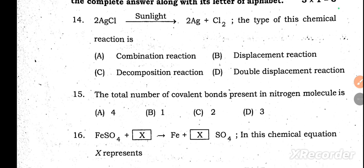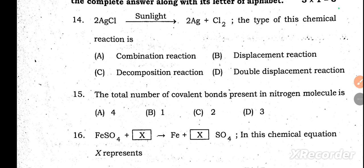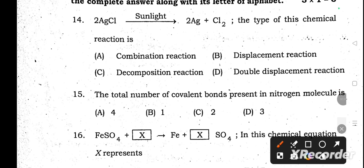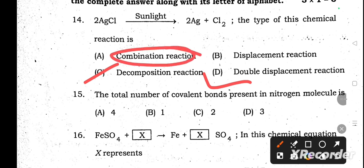Question 14: Silver chloride in the presence of sunlight gives silver and chlorine. The type of chemical reaction asked here — is it a combination reaction, displacement reaction, decomposition reaction, or double displacement? The answer is decomposition reaction. Combination means two or more reactants give one product.